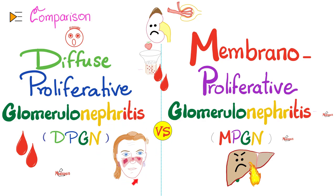The former is associated with lupus. The latter is associated with hepatitis B, hepatitis C, cryoglobulinemia, and sometimes C3 nephritic factor.